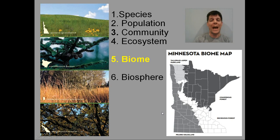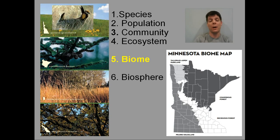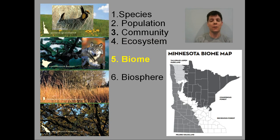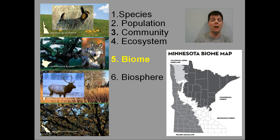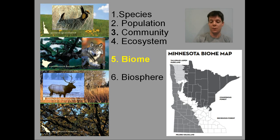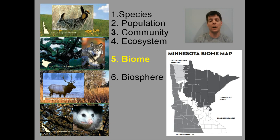In prairie grassland we obviously have grasses, and we'll also find things like the greater prairie chicken. Coniferous forests are highlighted by evergreen and pine trees, and we'll find animals like timberwolves there. In tall grass aspen parkland we have grasses, aspen trees, oak trees, and animals like elk. Finally, deciduous forest includes mostly trees that lose their leaves in the fall — oaks, maples — and familiar animals like the opossum.